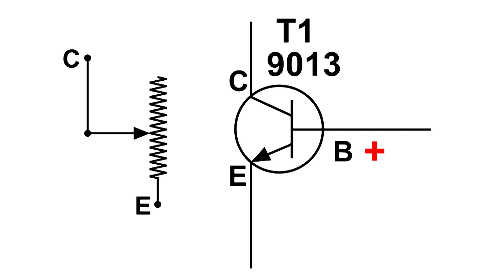And if we have a very large positive voltage on B, the resistance between E and C is very, very small.